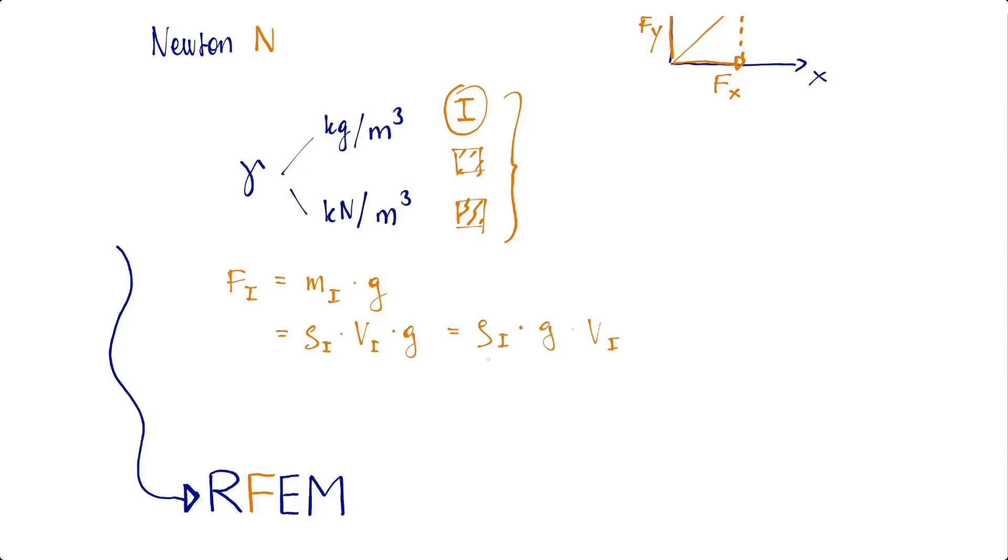We obtain the weight density from rho multiplied by g. The steel density is 7850 kilograms per cubic meter.